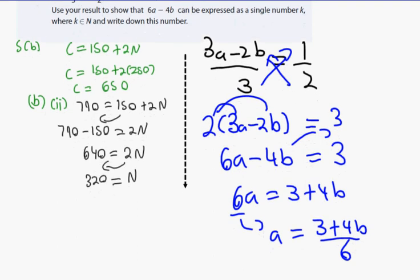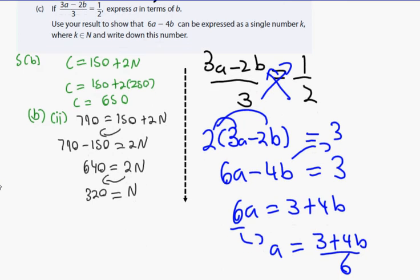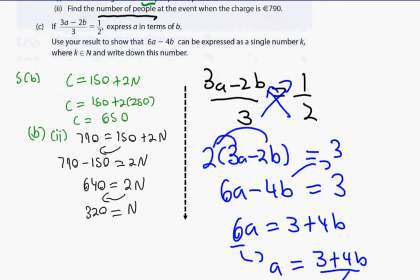Any questions? Happy enough? Now look at this. Use your result to show that 6a minus 4b can be expressed as a single number K. Does anybody see 6a minus 4b on its own in my solution? Just keep looking down. There. And what did I say it's equal to? 3. So there it is. Single number is 3. K equals 3. That's it done.